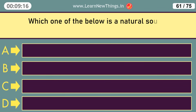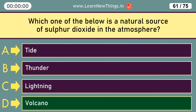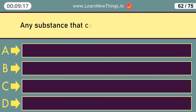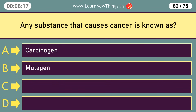Which one of the below is a natural source of sulfur dioxide in the atmosphere? Volcano. Any substance that causes cancer is known as a Carcinogen.